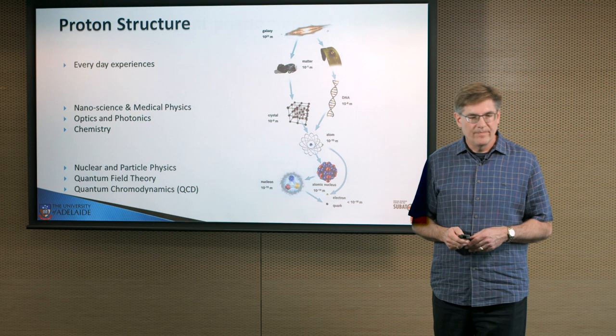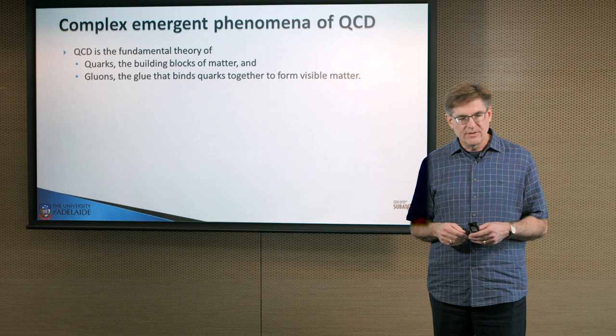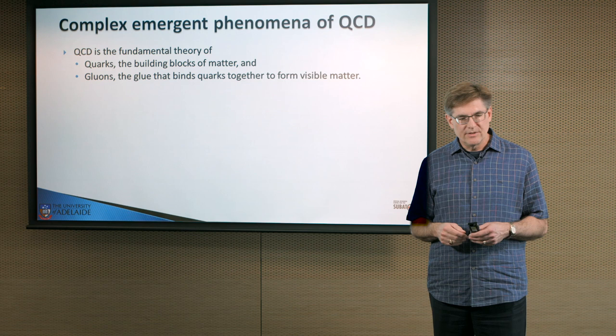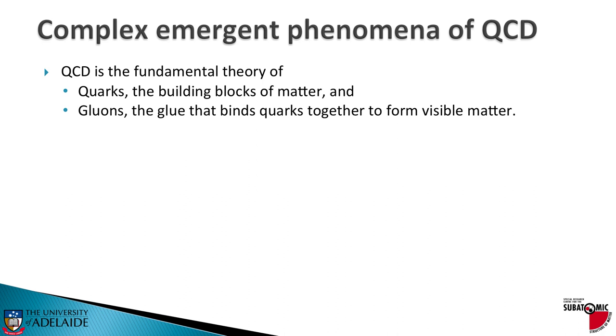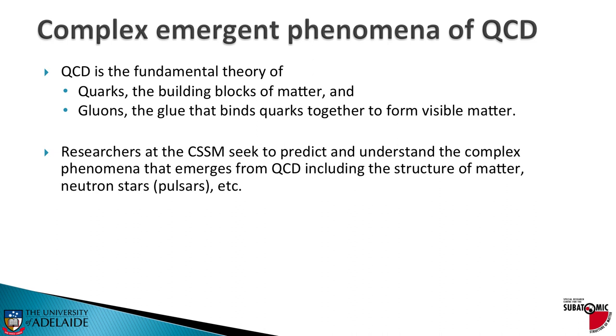QCD is the most fundamental theory that describes how quarks, which are the building blocks of matter, interact with each other through the exchange of gluons. They're very much the glue that binds quarks together in forming visible matter, the matter that we see in our universe. What we're trying to do is understand from the very first principles of the quantum field theory what the emergent phenomena is from QCD. What does QCD actually predict for our universe? And what insights into how our universe works can we obtain from that?